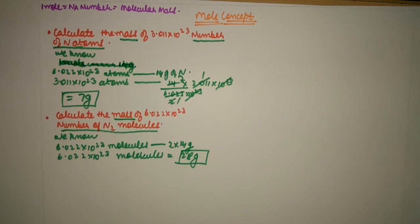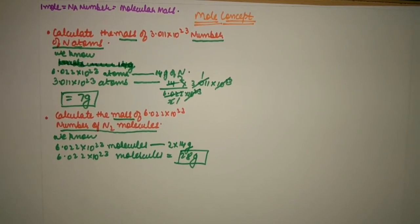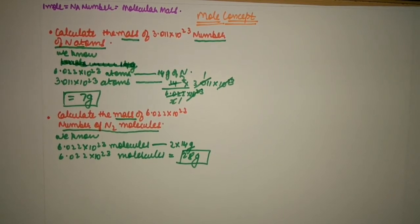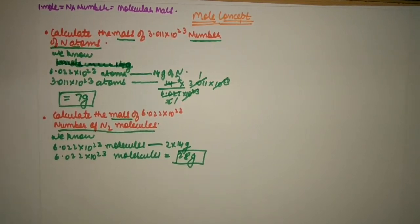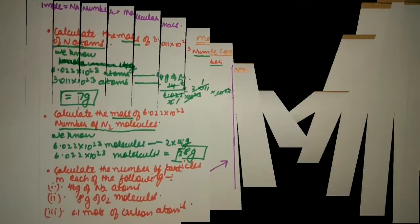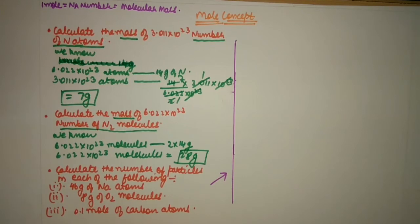We just need to remember one thing: 1 mole is equal to Avogadro's number, is equal to molecular mass, is equal to 22.4 liters at STP. The 22.4 concept hasn't appeared yet — in upcoming questions we will discuss it too.